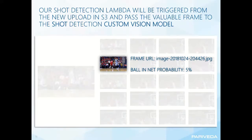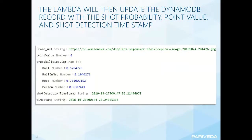Once the Lambda updates the DynamoDB record with the shot probability, it looks like this: we now have a point value. Since it was an unsuccessful shot in that frame, the point value is zero, the shot detection timestamp has been updated, and you'll see a new prediction here — ball and net.